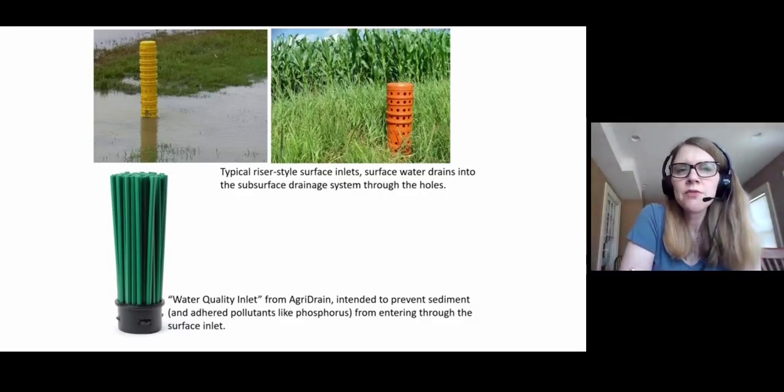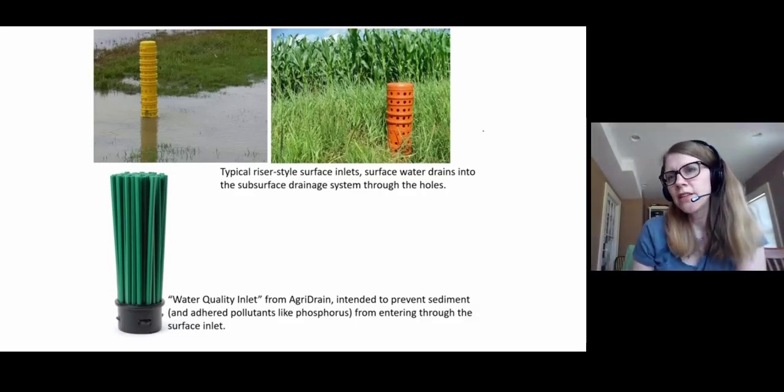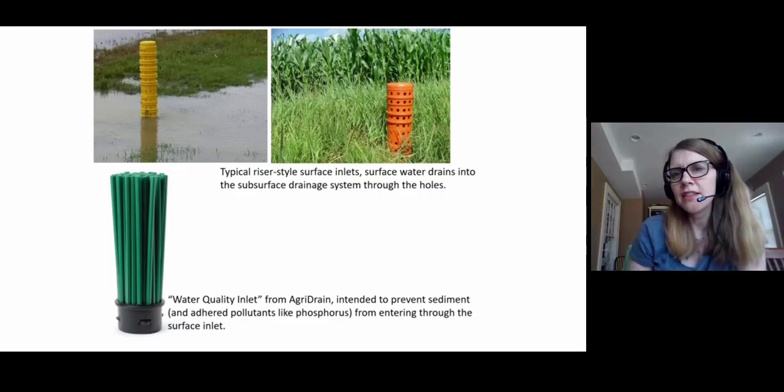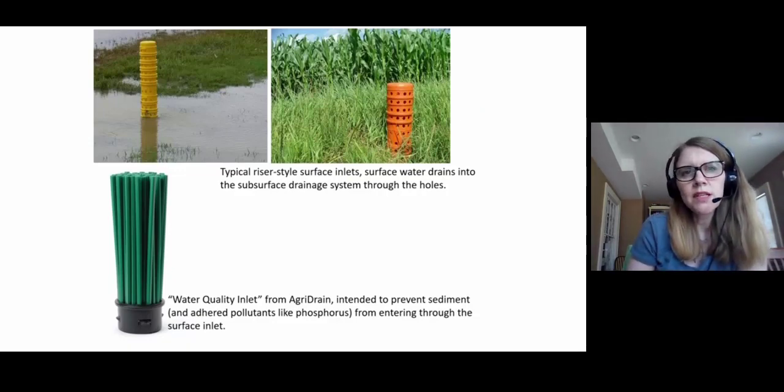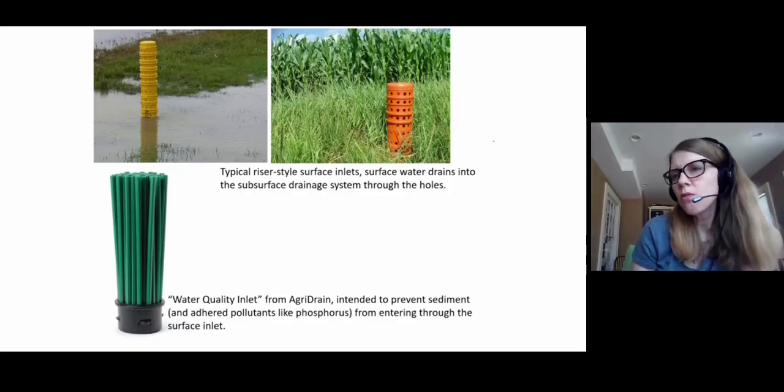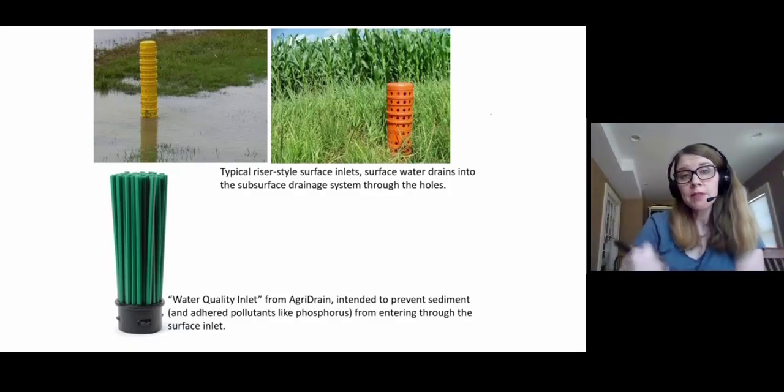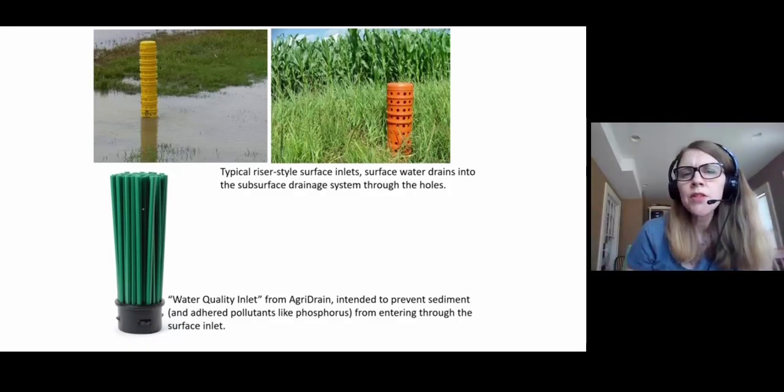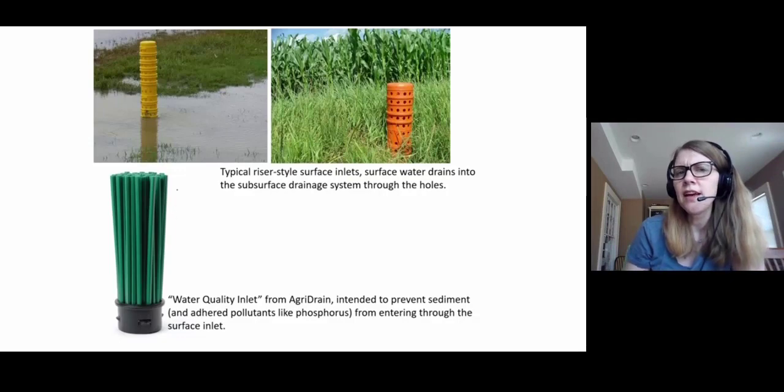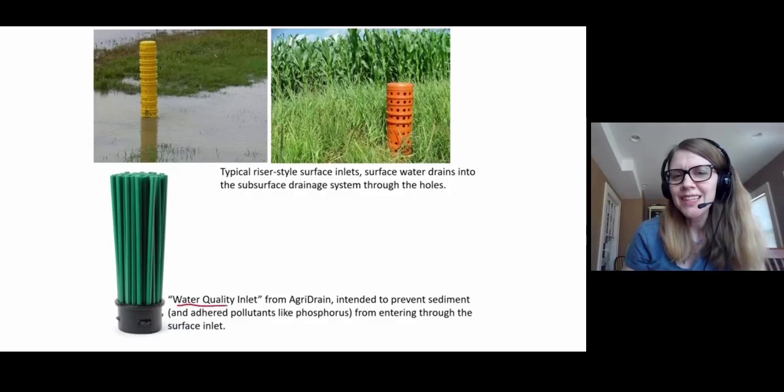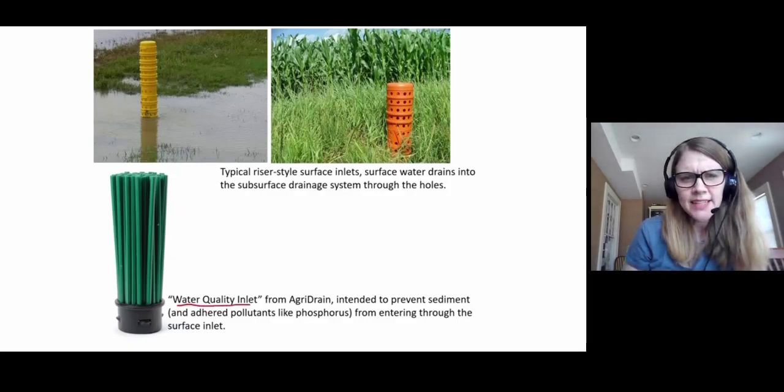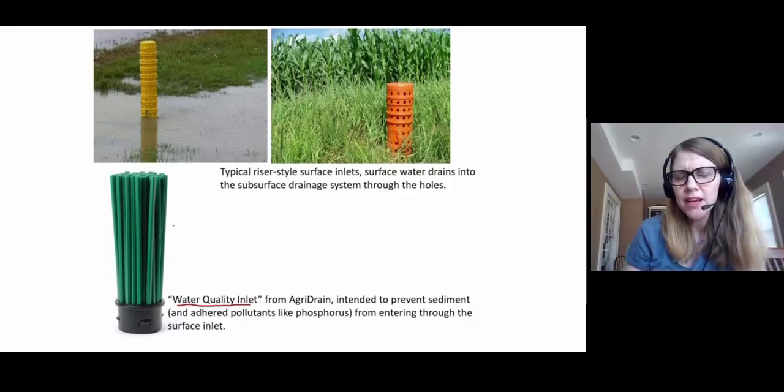So here's a couple of pictures of what these surface inlets look like. The most common are like this, just a pipe that sticks up out of the ground. It's got holes in it of some kind, and sometimes there's corrugated metal ones with holes, but a lot of times they're this hard plastic like this. But there's also people tinkering with different designs of these surface inlets.